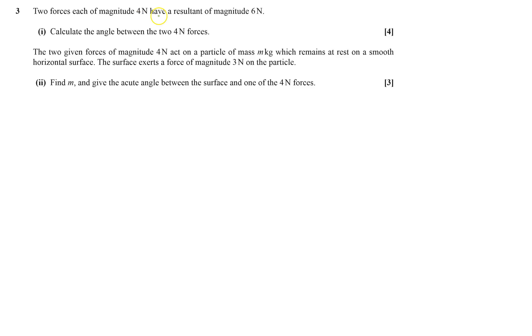Two forces each of magnitude four newtons have a resultant of six. That means if I take one force of four newtons and stick the other one on the end of it somehow, I'm going to have something like this.